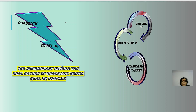Basically, it is the discriminant of the equation which unveils the dual nature of quadratic roots. They can either be real or complex. Let us try to understand what is the discriminant and how does it enable us to analyze the dual nature and discriminate between real and complex roots.